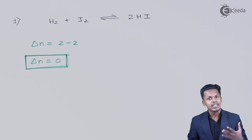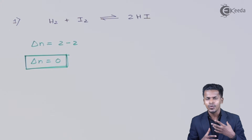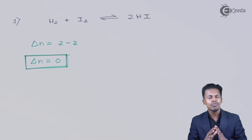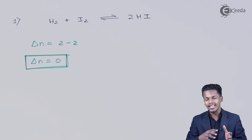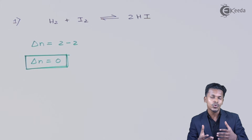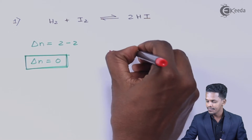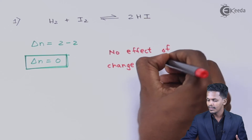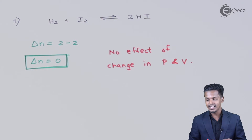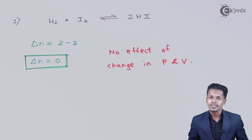Whenever delta n is found to be zero, it has been predicted that there is no effect of pressure and volume. Even if we apply high pressure or increase the volume, there would be no effect on it, and the reaction would remain in an equilibrium position only. We cannot make the reaction a forward reaction or convert it into a backward reaction — there is no effect of change in pressure and volume.